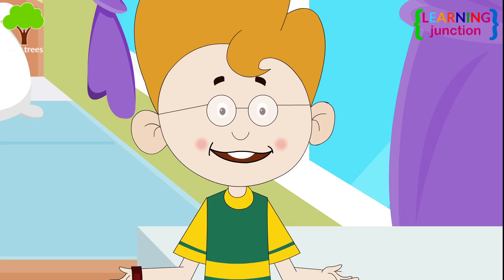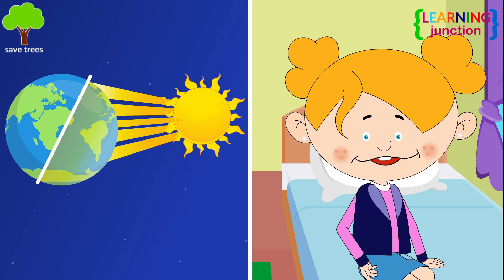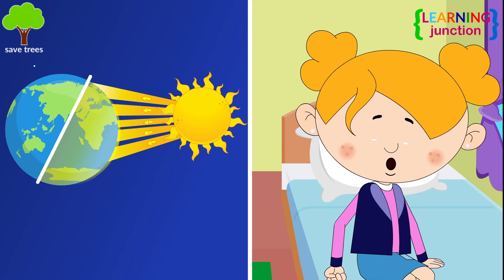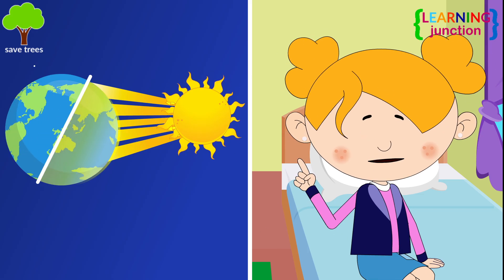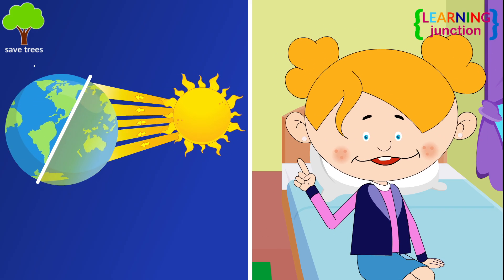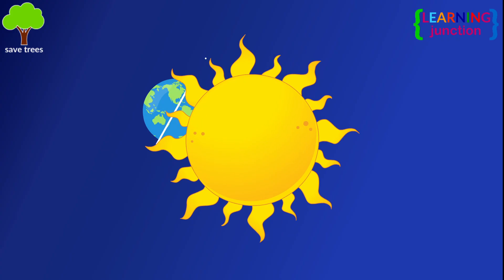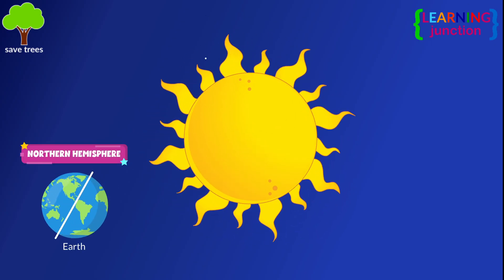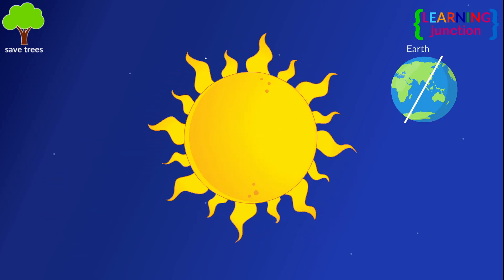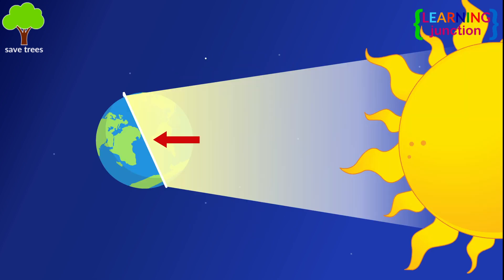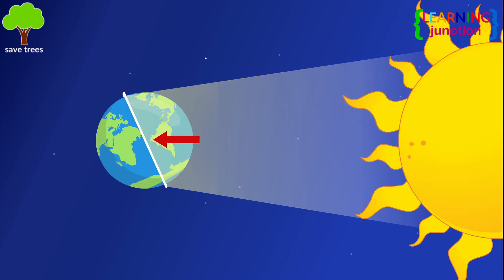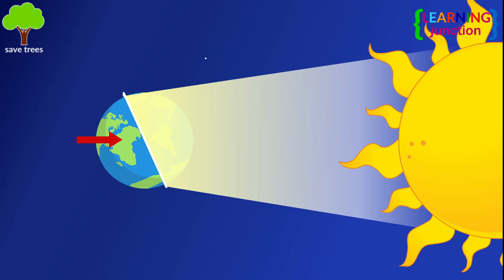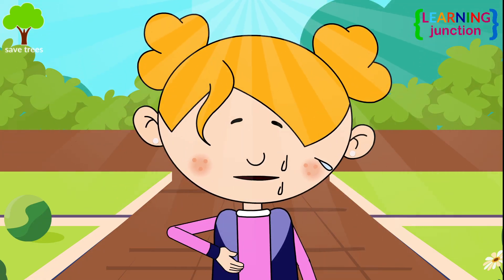There must be some significance of this. Because of this angle, the solar energy reaching different parts of the earth is not constant, but varies during the year. When the earth's angle of inclination is towards the sun, it is summer in the northern hemisphere and winter in the southern hemisphere. When the angle of inclination is away from the sun, it is winter in the northern hemisphere and summer in the southern hemisphere.